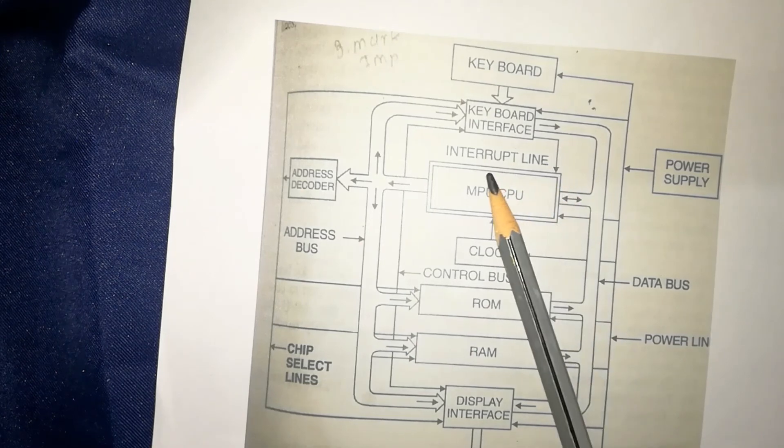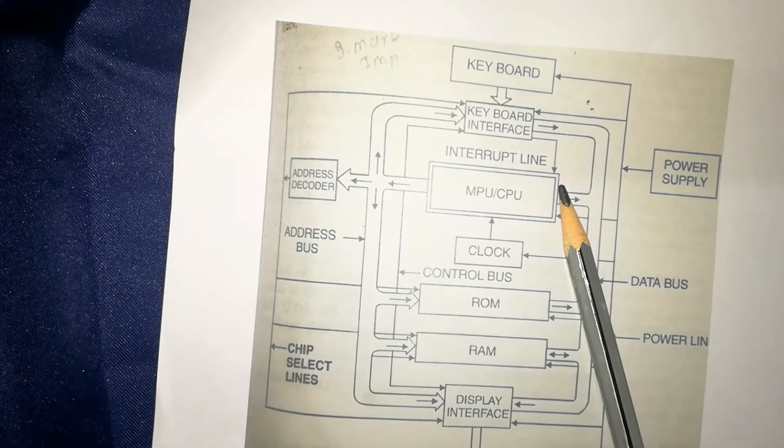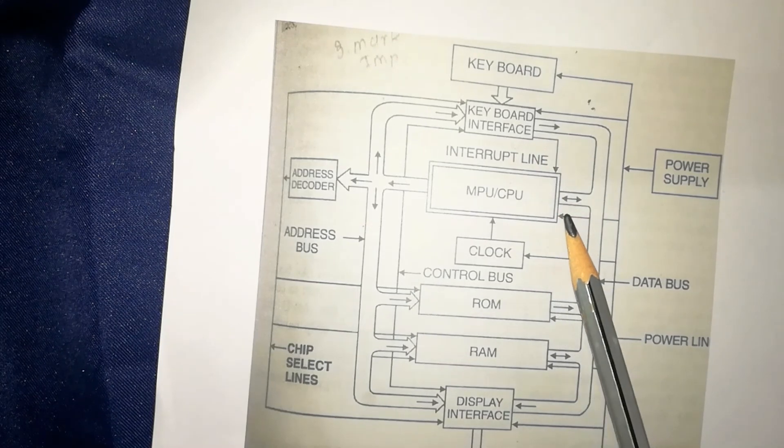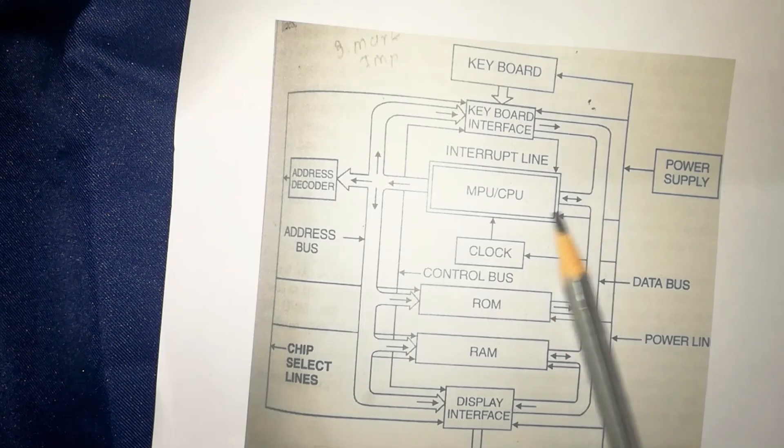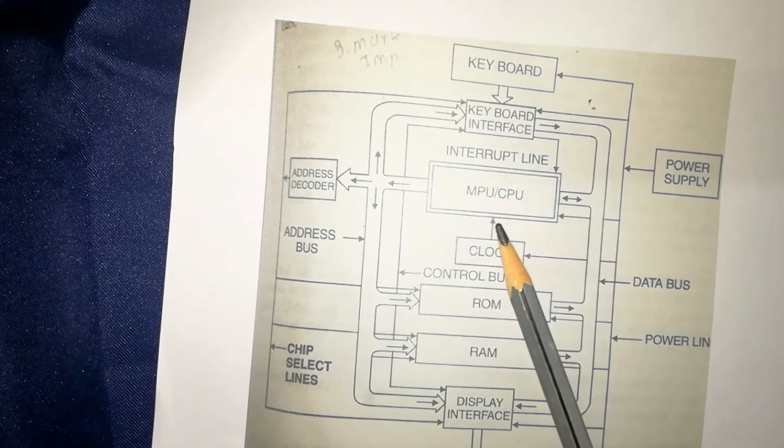One more point is interrupt line is there. It is used to give interrupt signals to the microprocessor.